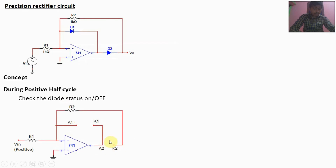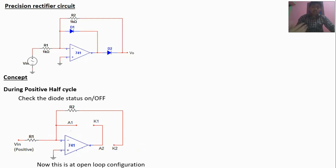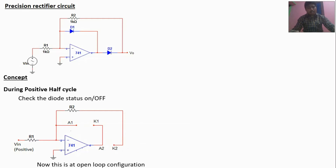Diodes are open. This is the anode terminal and this is the cathode terminal. Here is the anode terminal of diode D2 and this is the cathode terminal of diode D2. This is the open-loop configuration — there is no feedback at the input terminals. So the output will be either plus V-saturation or minus V-saturation, that means plus 15 volts or minus 15 volts. If V-minus is higher than V-plus, the output will be minus V-saturation. If V-plus is higher than V-minus, the output will be plus V-saturation.